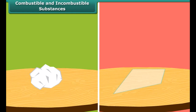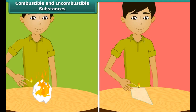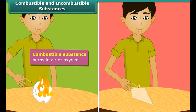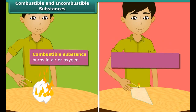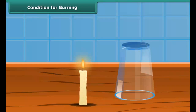There are two types of substances: some substances catch fire and burn, while others do not. The boy is bringing a lighted matchstick close to paper and glass. Paper catches fire, so it is called a combustible substance. Glass does not burn, and such substances which cannot burn in air or oxygen are called incombustible substances.